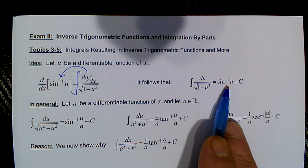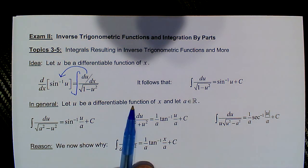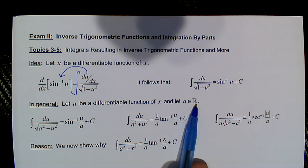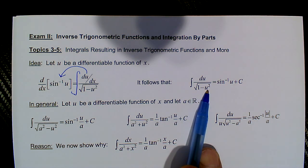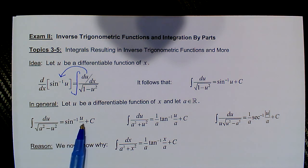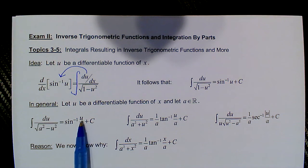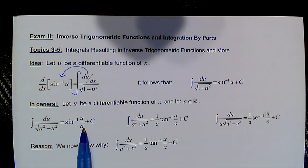But we don't always have the luxury of that number under the radical being equal to 1, so we have to consider cases where it is not. In general, we let u be a differentiable function of x and let a be a real number. So instead of 1 minus u squared under the radical, we consider a squared minus u squared. It can be shown that because we have a squared instead of 1, the argument u in the anti-derivative gets modified by being divided by a.